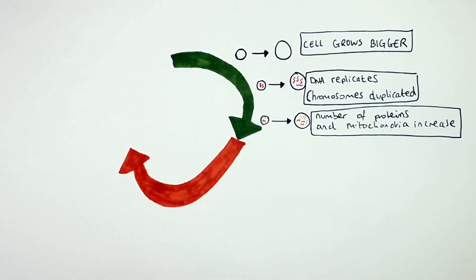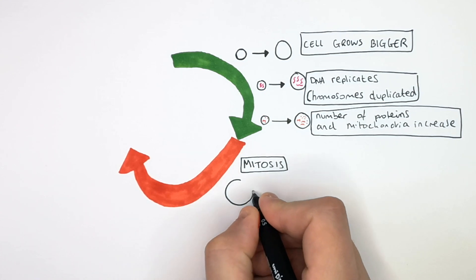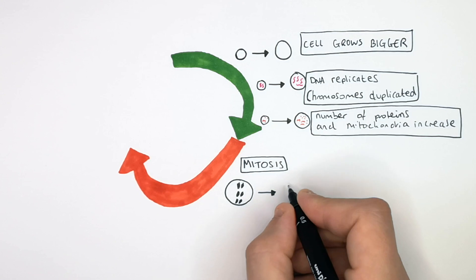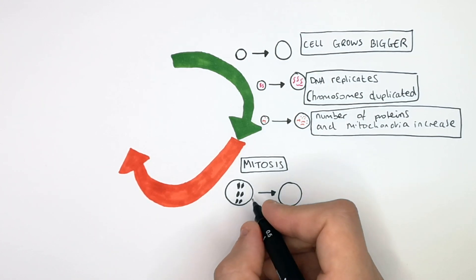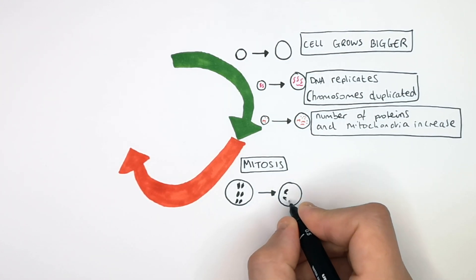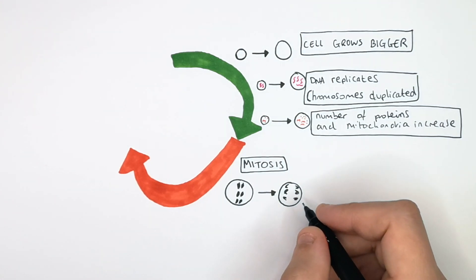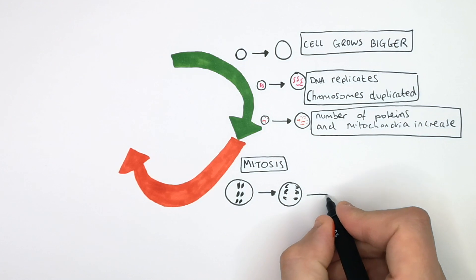Stage two of cell cycle is mitosis itself, where the chromosomes line up down the middle of the cell. The chromosomes then move away from the middle to the poles of the cell, moving away from the equator to each side.